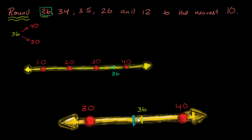When you just look at that, even just eyeballing it, you can see it — but you could also say 36 is only 4 away from 40, and it's 6 away from 30. It's closer to 40. So we are going to round up to 40.